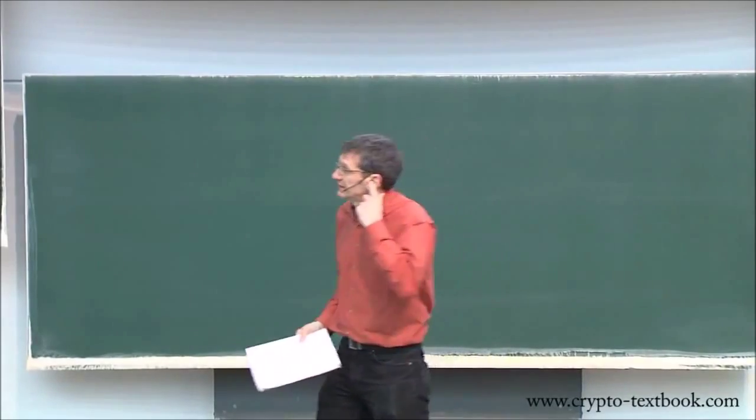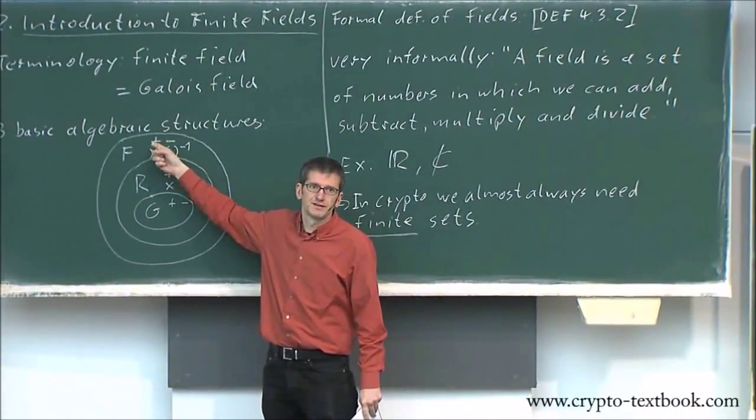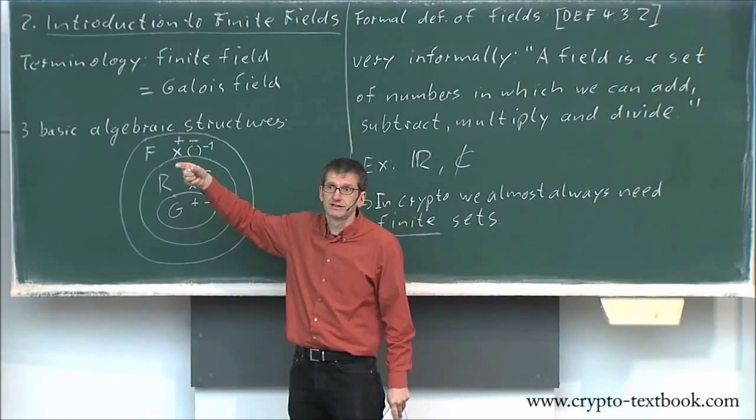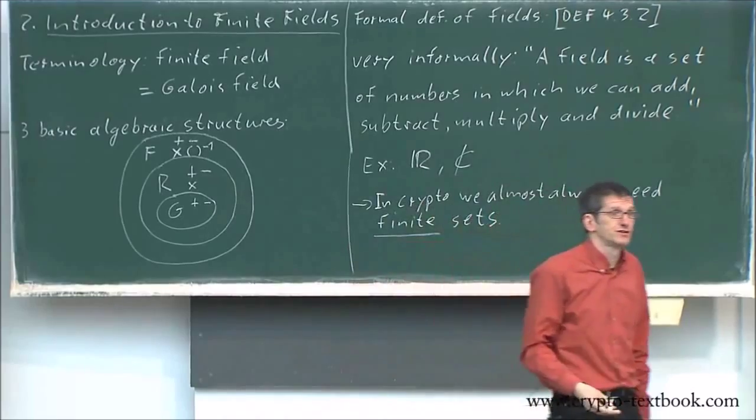So the goal now is, we had these funny rules, all the rules that the field has to fulfill here, and now we want to have a finite number of elements that fulfills that. And there's a very weird existence theorem.